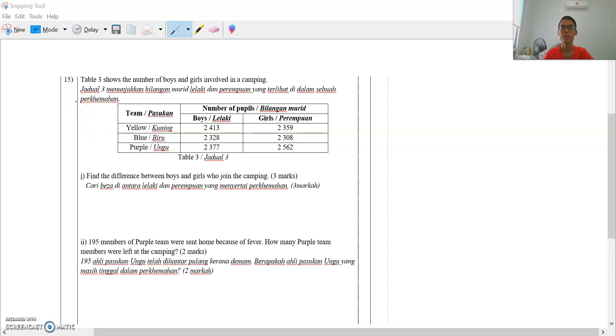We have come to the final question for Table 2. Table 3 shows the number of boys and girls involved in a camping. So we have 3 teams here: yellow, blue, purple, and then all these numbers are those who are boys and these are girls.